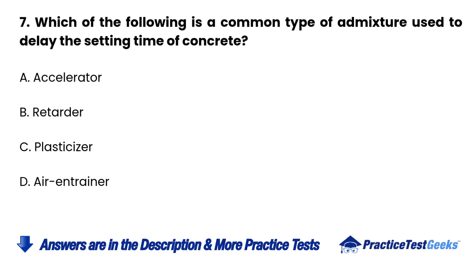Question 7. Which of the following is a common type of admixture used to delay the setting time of concrete? A. Accelerator. B. Retarder. C. Plasticizer. D. Air-entraining agent.